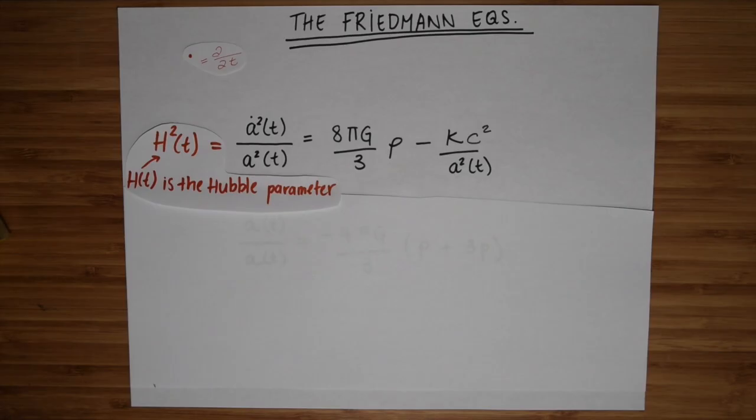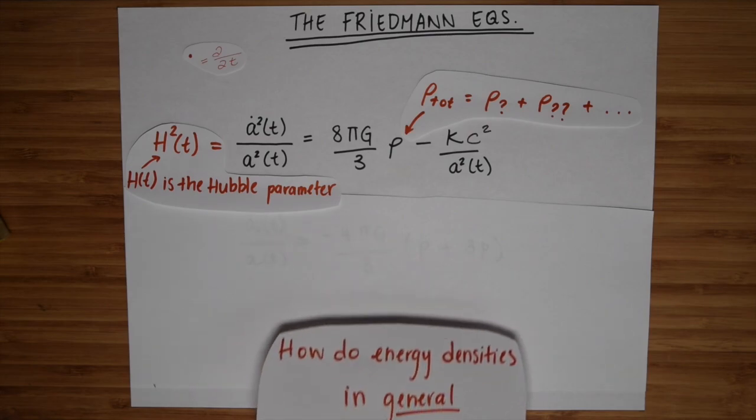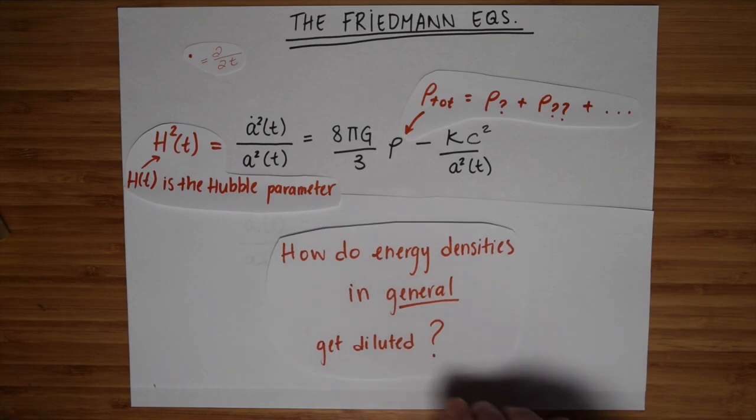But we're not quite done yet. See this row? This is the total energy density of our universe. But to really understand this equation, we need to know exactly what types of energy densities make up the universe and how each of them get diluted as the universe expands. So we can ask ourselves, how do energy densities in general get diluted?